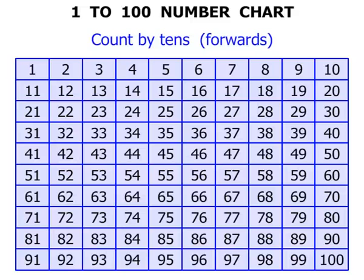We might not always have to start at 10. Let's say we started at 17. From there we'd go 27, 37, 47, 57, 67, 77, 87, and 97. So these sort of patterns you can see. With practice you won't even need the number chart.